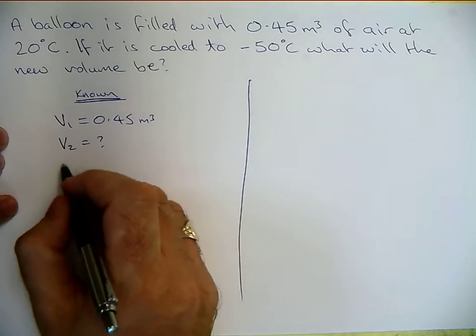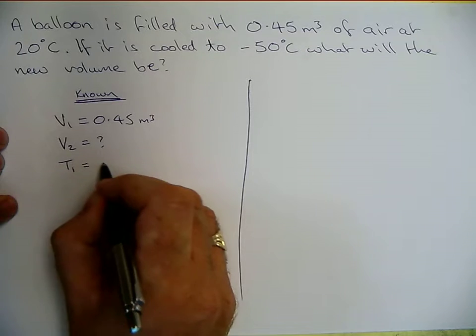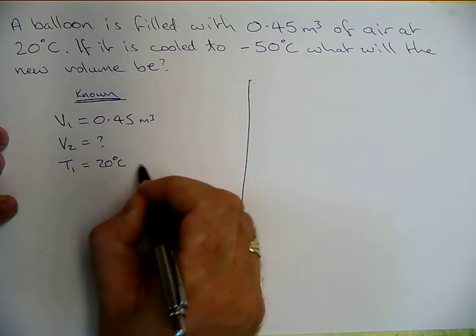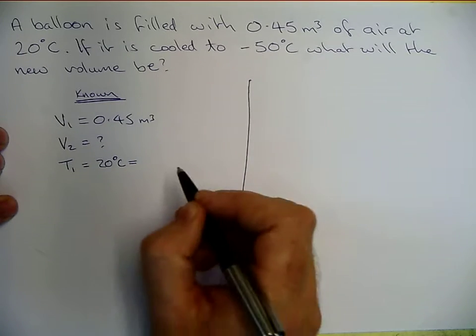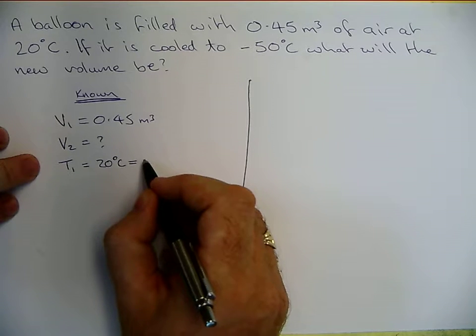We know it starts off at 20 degrees Celsius. That's the starting temperature T1, 20 degrees Celsius. But we don't work in Celsius, we work in Kelvin. So we add 273,